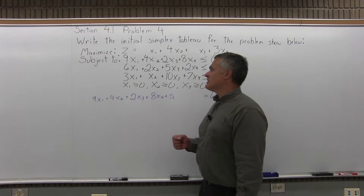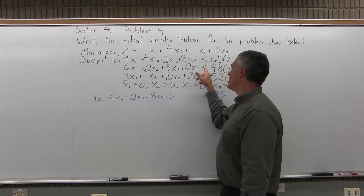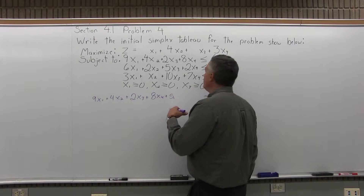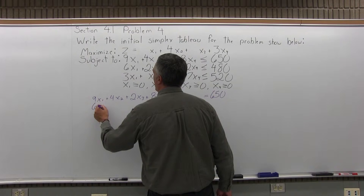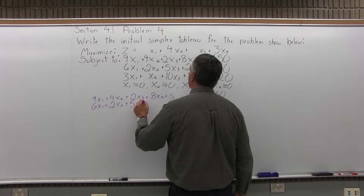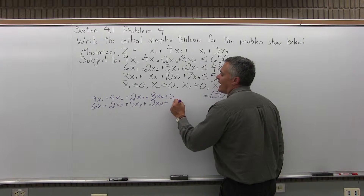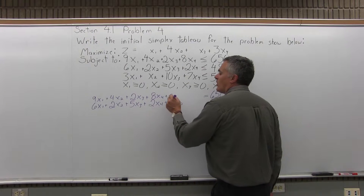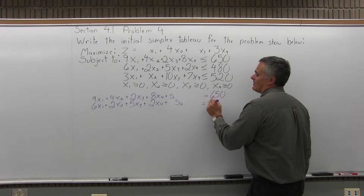The next constraint to convert to an equation is 6x1 plus 2x2 plus 5x3 plus 2x4 less than or equal to 480. That becomes 6x1 plus 2x2 plus 5x3 plus 2x4 plus s2 equals 480.